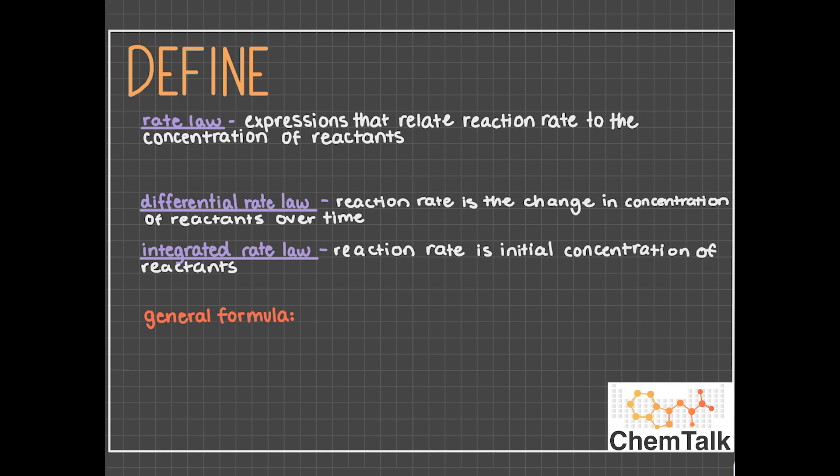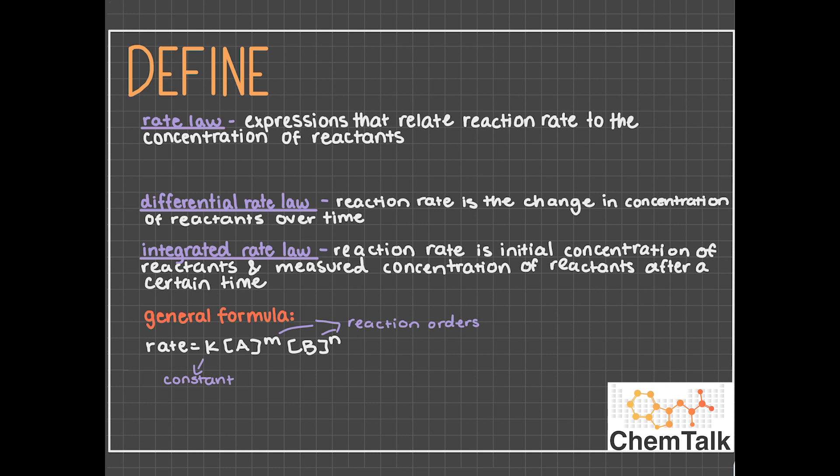This is the general formula for a rate law expression. K is the rate law constant, and the M and N represent reaction orders. These are determined by conducting experiments and measuring changes in reactant concentration over time. And the overall order of a reaction is M plus N, the sum of all the orders.